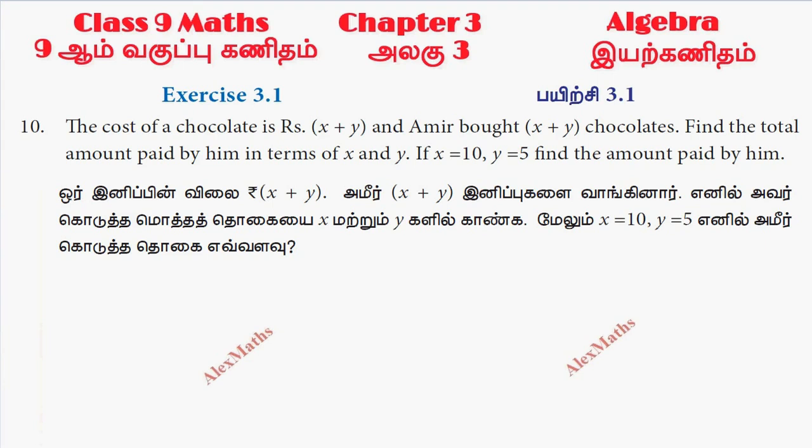Hi students, this is Alex. Exercise 3.1, question number 10. The cost of a chocolate is rupees (x+y), and Amir bought (x+y) chocolates. Find the total amount paid by him in terms of x and y.